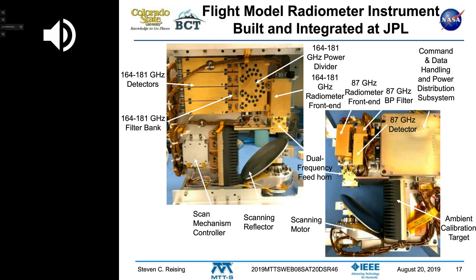Here's the Tempest instrument in more detail. On the lower right of the photo, we see the scanning motor. The scanning reflector is an offset paraboloid reflector collimating the received signal onto a dual-frequency feed horn shown just above the reflector.